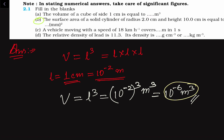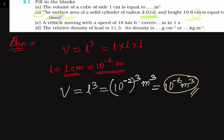Now let us go to the second part of the problem. We have the surface area of a solid cylinder of radius 2.0 centimeter and height 10 centimeter, and we have to find it in millimeter square. The given radius and height are in centimeter, but we have to find the surface area in millimeter, so we need to convert centimeter into millimeter first.